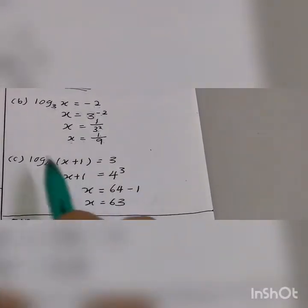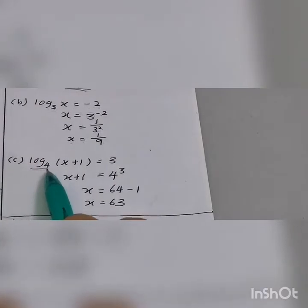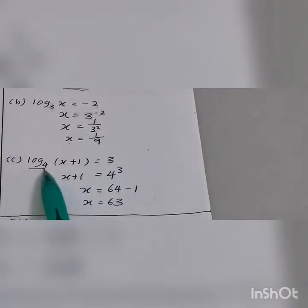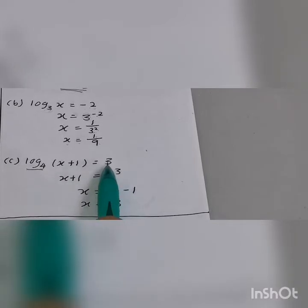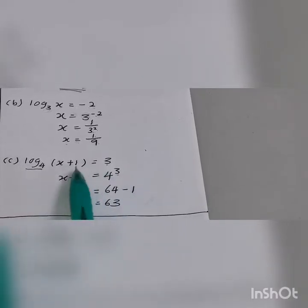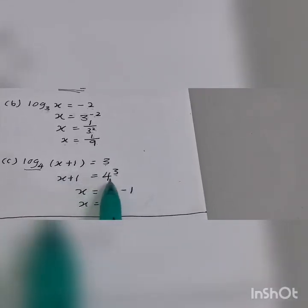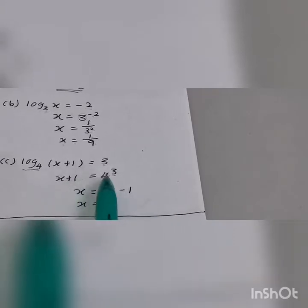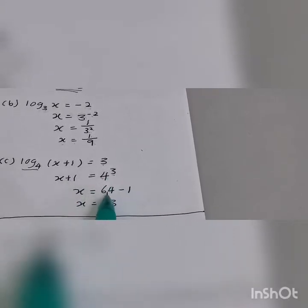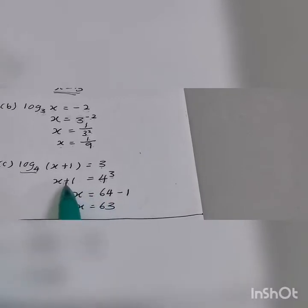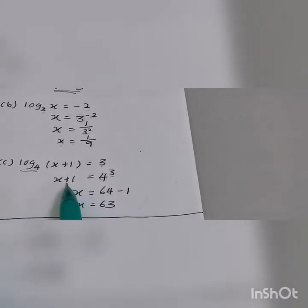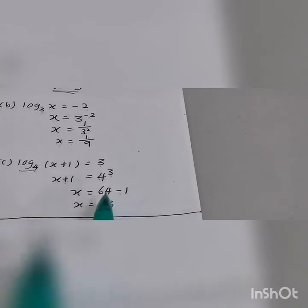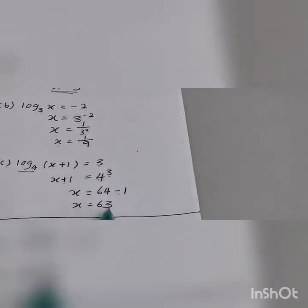How about this one: log base 4 — move to the right-hand side, so 4 becomes the base and 3 becomes the power, giving x plus 1. Now it's in algebra form. 4 to the power 3 becomes 64. Then move positive 1 to the right-hand side as negative 1, so the final answer is 63.